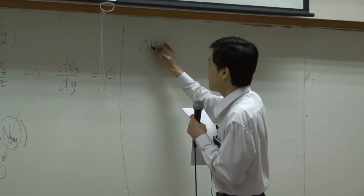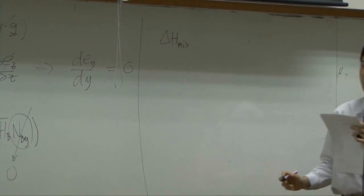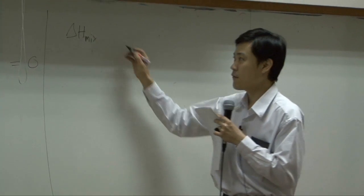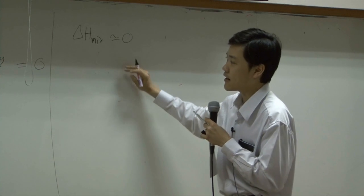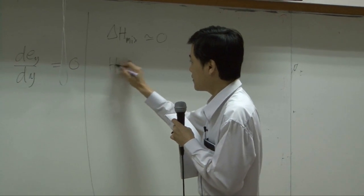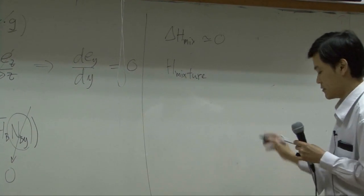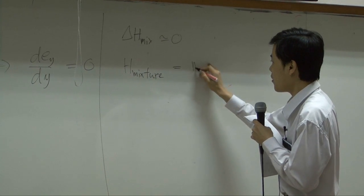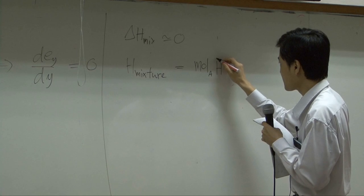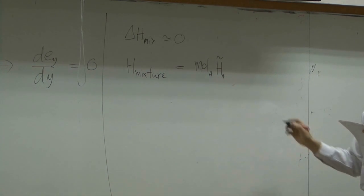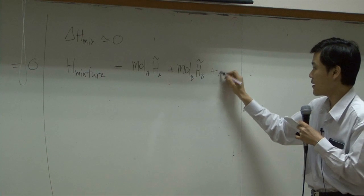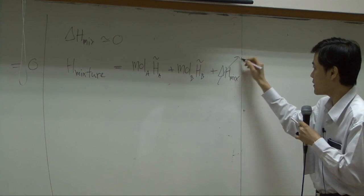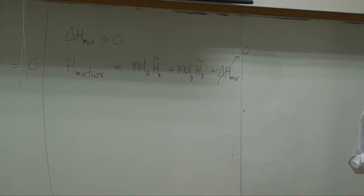But from now, I'm going to say that let's assume the solution or the mixture to be ideal mixture. So therefore, delta H of mixing is negligible. As long as delta H of mixing is negligible or heat of mixing is negligible, then you can calculate enthalpy of the mixture from the mole of A times molar enthalpy of A plus mole of B times molar enthalpy of B. Because normally you have delta H of mixing here, but this turns to be negligible.